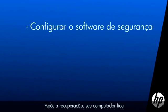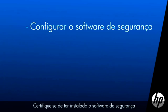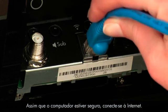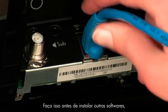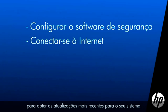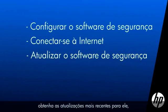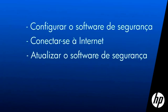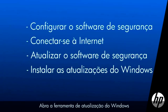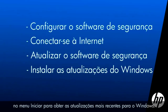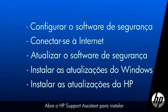After recovery, your computer is more vulnerable to security threats. Make sure you have security software installed before connecting to the Internet. Once your computer is secure, connect to the Internet and open your computer software to get the latest system updates. Open your security software and get the latest updates, especially updates to virus definitions. Open the Windows Update tool in the Start menu to get the latest updates for Windows. Open HP Support Assistant to install the latest important updates from HP.